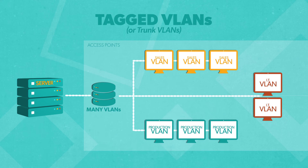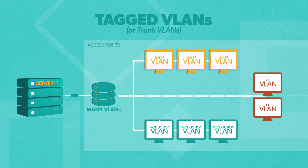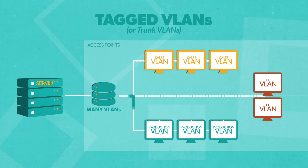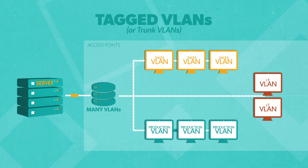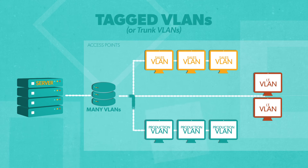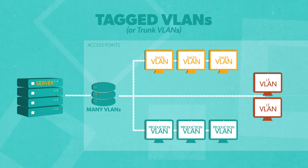Tagged or trunk VLANs enable switch access ports to handle more than one VLAN and separate traffic accordingly. Instead of the data going from one host to another, frames with a VLAN tag can be distributed from one host to many other hosts connected to a port, depending on their configuration. The tags denote which packets should be sent to specific VLANs on the other side.